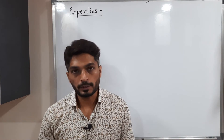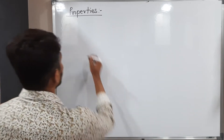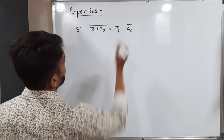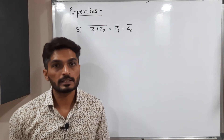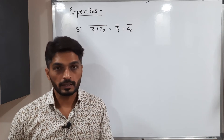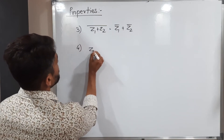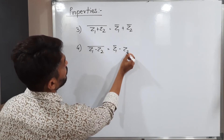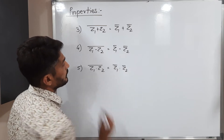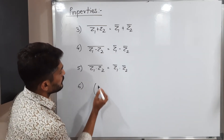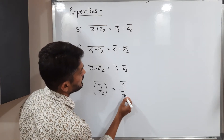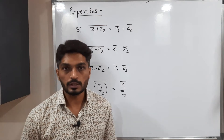The remaining properties can be verified by assuming z1 equals x1 plus iy1 and z2 equals x2 plus iy2 and checking both sides. Third: the conjugate of z1 plus z2 equals z1-bar plus z2-bar. Similarly, for subtraction you can take separate conjugates. For multiplication, the conjugate of z1 times z2 equals z1-bar times z2-bar. And for division, the conjugate of z1 over z2 equals z1-bar over z2-bar. These are frequently used properties.